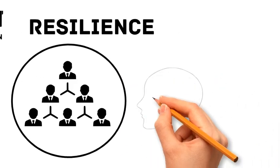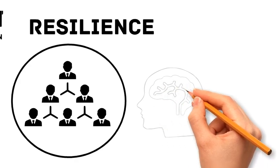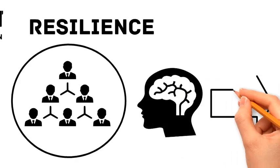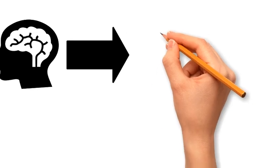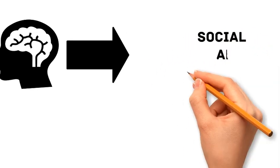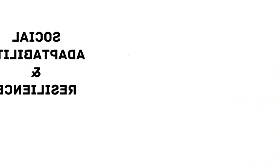We must invest in mental health resources and support systems that can help individuals cope with the pressures of modern life. Encouraging social adaptability and resilience can help prevent the kind of social decay observed in Universe 25 Experiment.